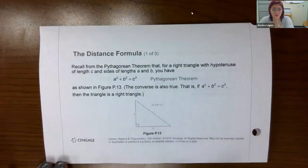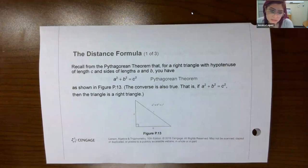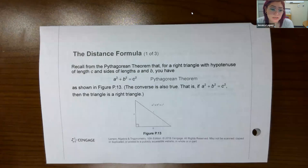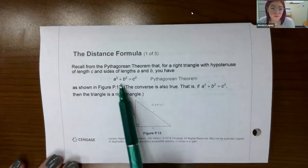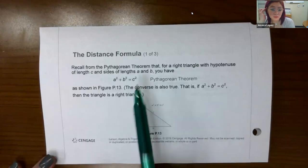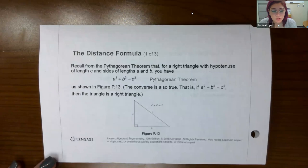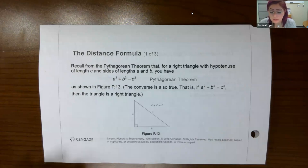Now that we know how to plot points, some other helpful information is knowing how to find the distance between two points. When we're trying to find the distance between two points, we incorporate the Pythagorean theorem — an idea adopted from geometry. For the Pythagorean theorem: a right triangle with hypotenuse of length c and sides of lengths a and b satisfies a² + b² = c². The converse is also true: if a² + b² = c², then the triangle is automatically a right triangle.